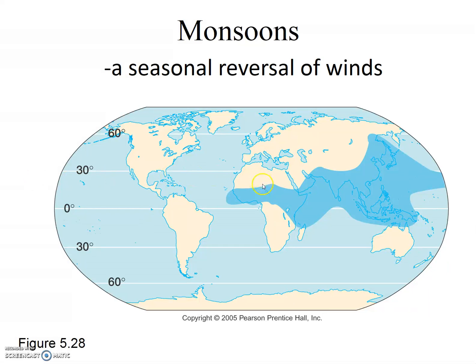Africa, Southern Asia, Southeast Asia, and East Asia are the places we typically think of monsoons, though there is a small monsoon effect also in the southwestern part of the United States. The most intense and well-known monsoon region of the world is Southern Asia.